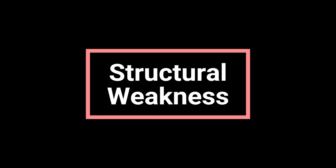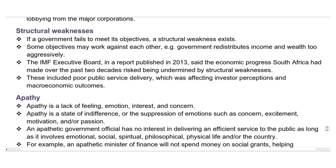Next is structural weaknesses. If a government fails to meet its objectives, a structural weakness exists. Some objectives may work against each other — for example, if the government redistributes income and wealth too aggressively. The IMF Executive Board, in a report published in 2013, said the economic progress South Africa had made over the past two decades risked being undermined by structural weaknesses. These included poor public service delivery, which was affecting investor perceptions and macroeconomic outcomes.